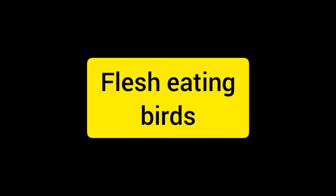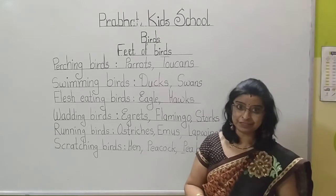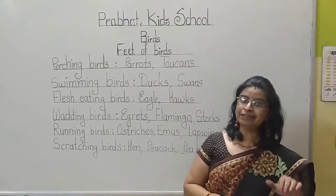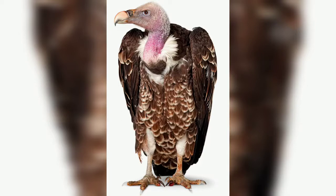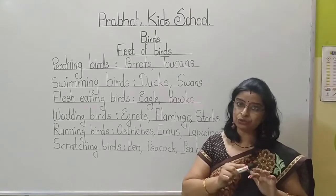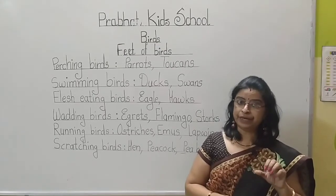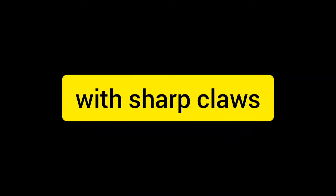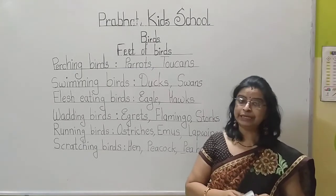Then another type is the flesh-eating birds. Some birds are flesh-eating birds, like the eagle, vulture, kite, and hawk. These birds kill small animals and eat their flesh. For that purpose, their feet are strong with sharp claws. Due to these sharp claws, they hold and tear their prey. These flesh-eating birds have strong feet with sharp claws called talons, and these talons help them to tear the flesh.